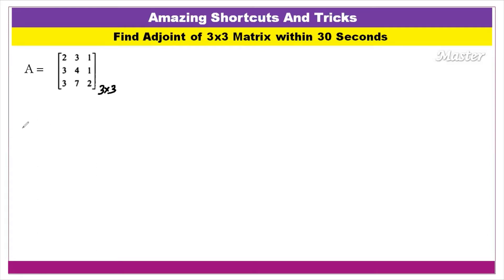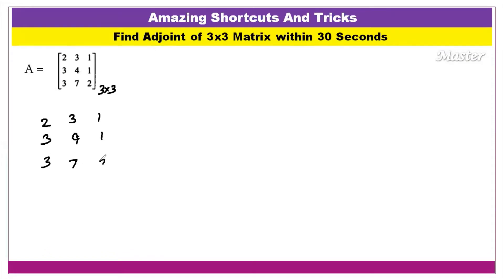This matrix is here. The first row: 2, 3, 1. The second row: 3, 4, 1. Next row: 3, 7, 2. Again, you can write it down.